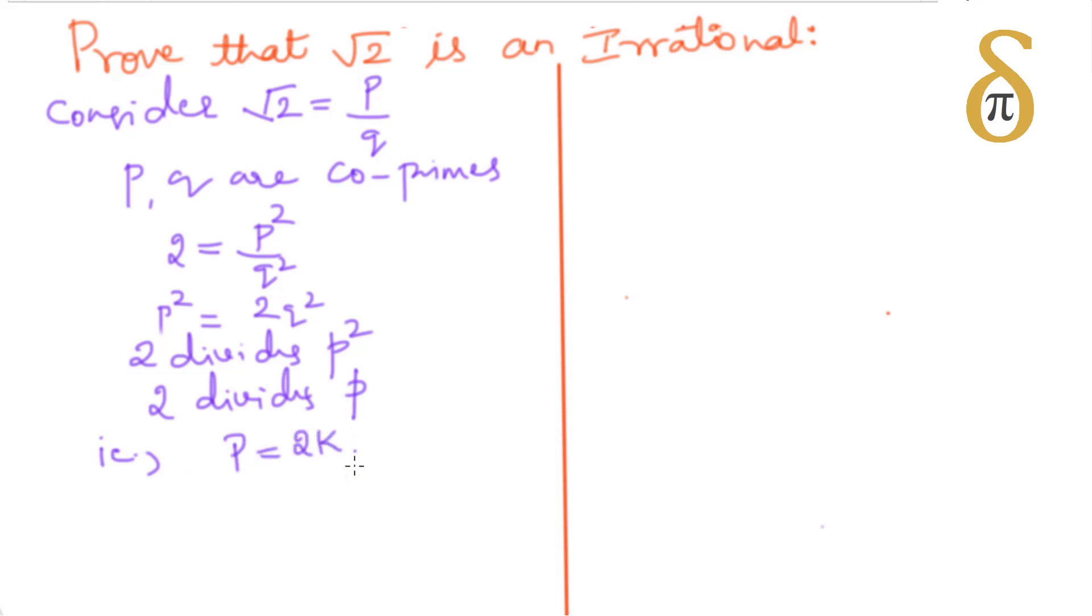Let us take p equals 2k. Squaring on both sides, p squared equals 4k squared. We know that p squared is 2q squared. So 2q squared equals 4k squared. On simplifying you will get q squared equals 2k squared. It means 2 divides q squared. If 2 divides q squared then 2 divides q.